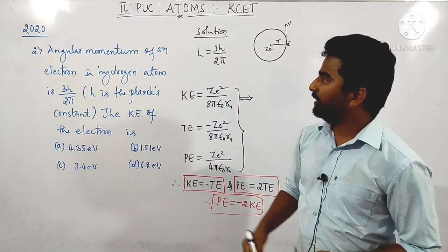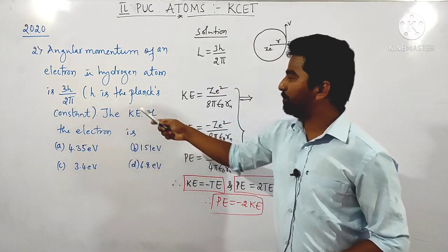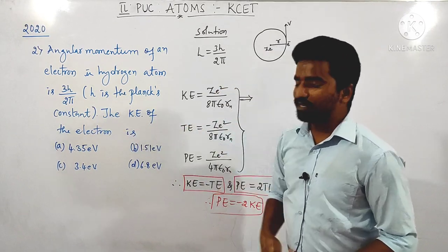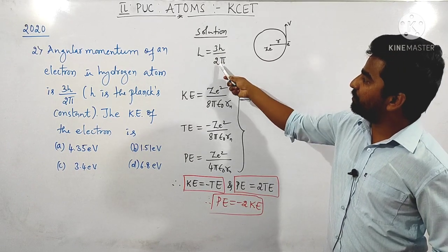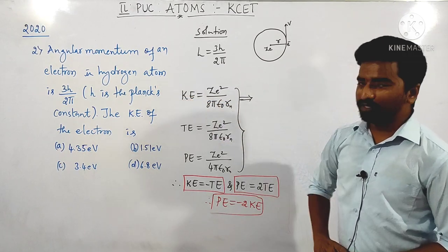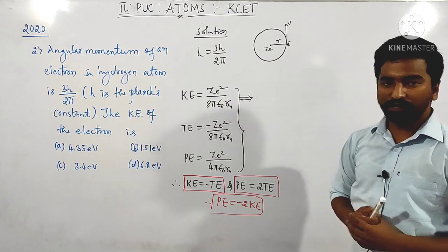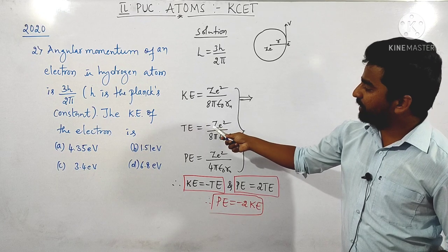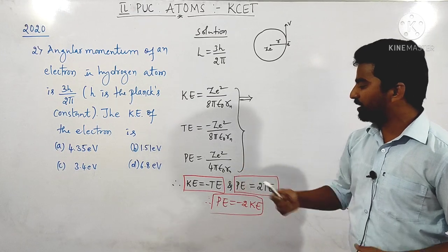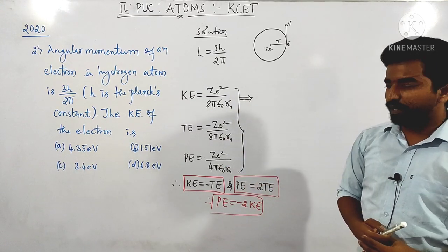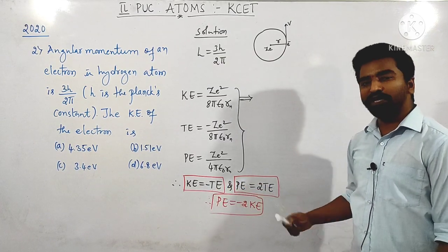Next question asked in the same year 2020: the angular momentum of an electron in a hydrogen atom is 3h/2π, where h is the Planck constant. The kinetic energy of the electron is given by — and they give four options. The angular momentum given is 3h/2π. To calculate kinetic energy, the formula is Ze²/(8πε₀R).